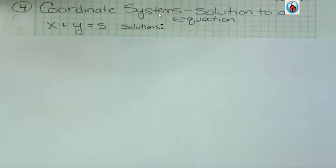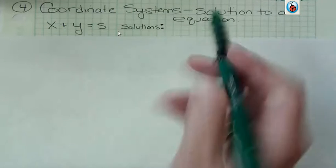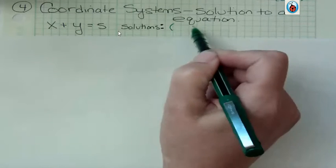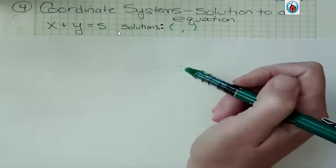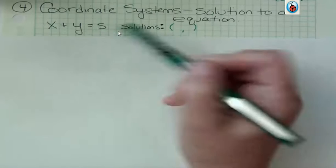When you have a solution to an equation that has an x and a y like this, then you have to have two parts to your solution, an x and a y part. Since we've just been talking about the coordinate system, we need to have an ordered pair when we talk about the solution. What we want to know is what is a combination for x and y that would make this statement true? Some x plus some y equals 5.